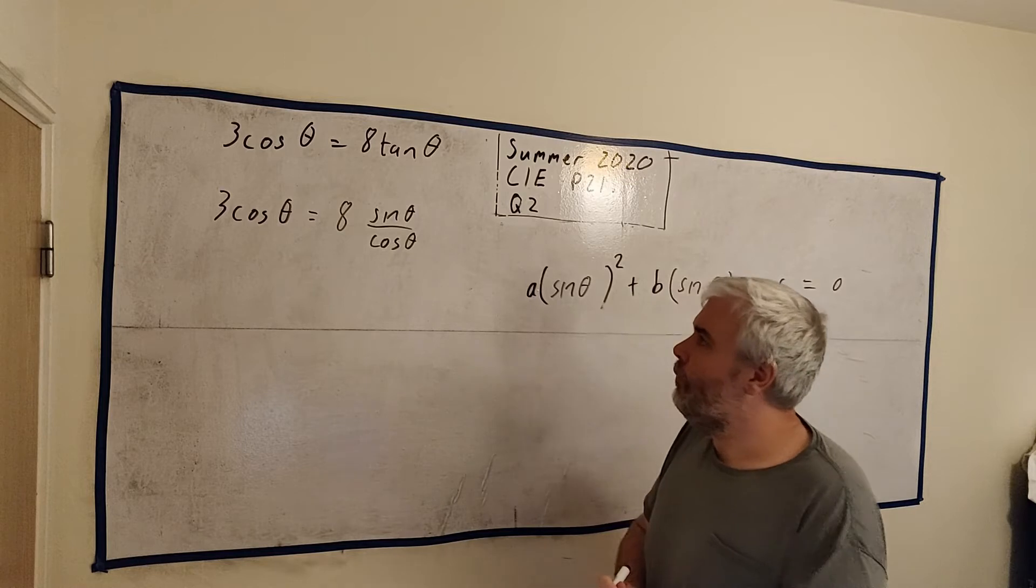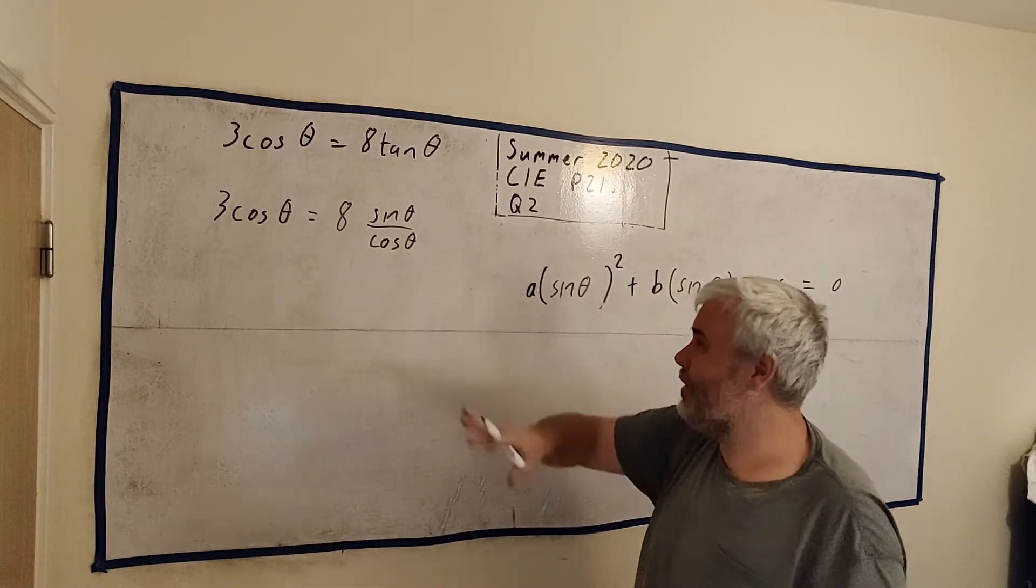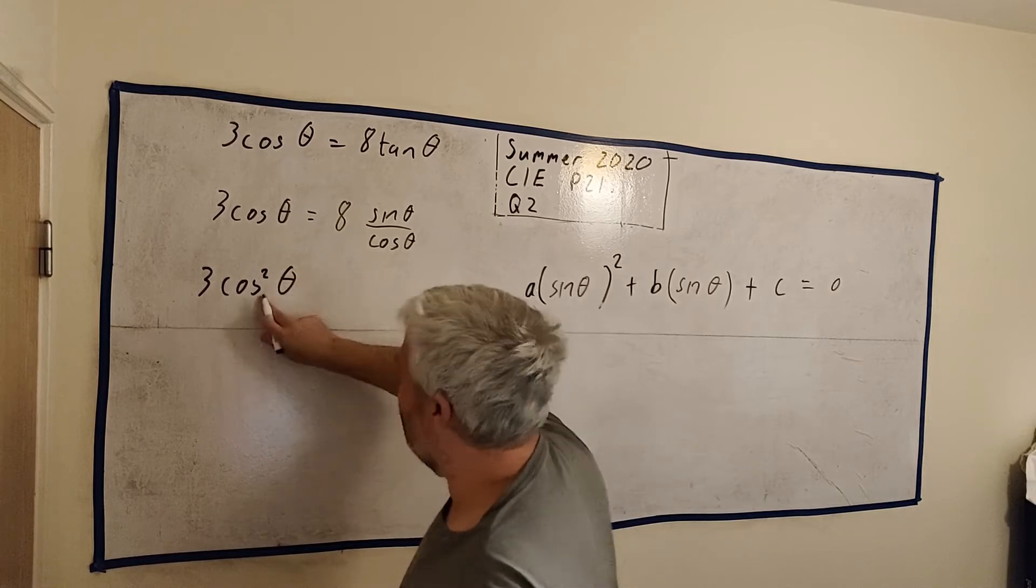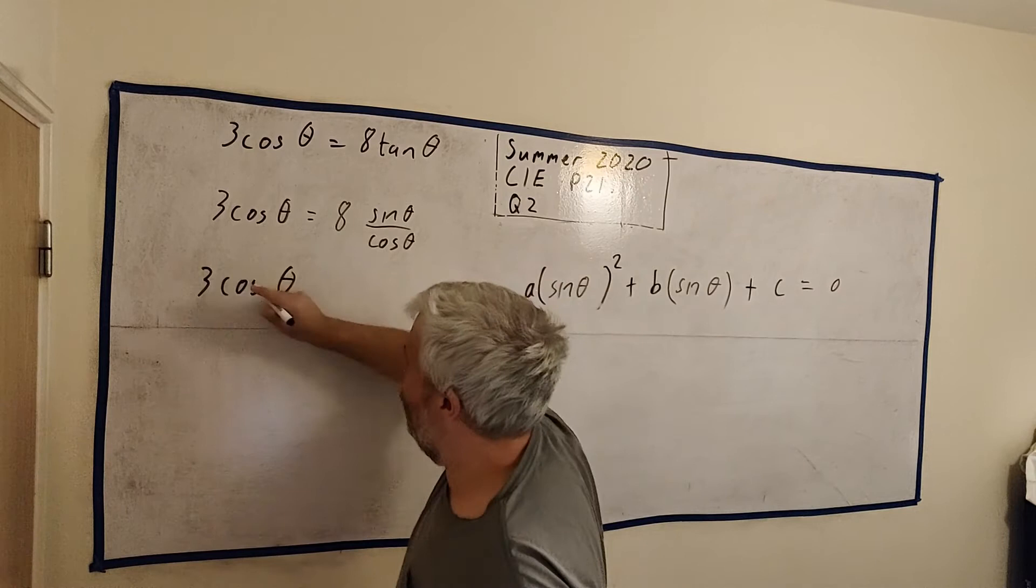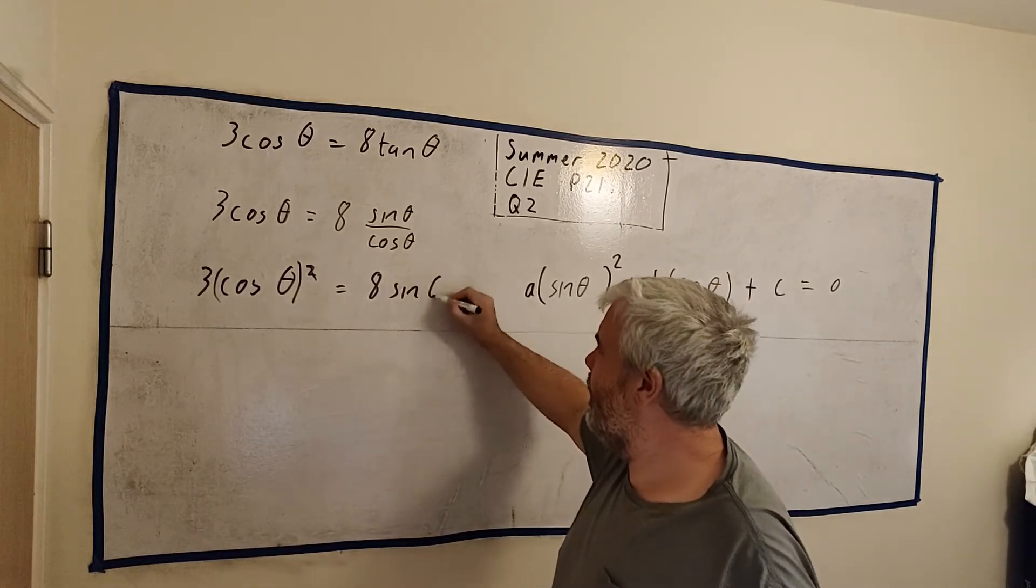But I can already see ahead where they're going to disappear. A common thing probably would be to just multiply by cosine theta anyway because it's on the bottom row. We'd like to get rid of it. So let's multiply everything by cosine theta. We get 3 cosine squared theta. Sorry, cosine squared theta just means cosine theta squared. It's one of the more confusing things in maths. I'll leave it like this for the moment. Equals 8 sine theta.